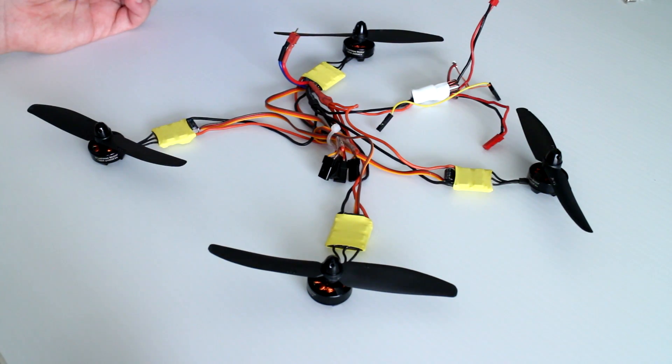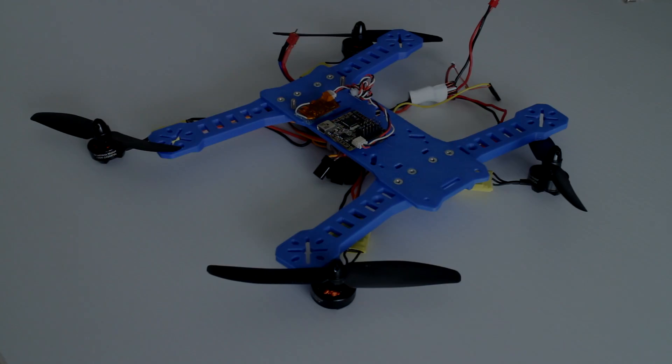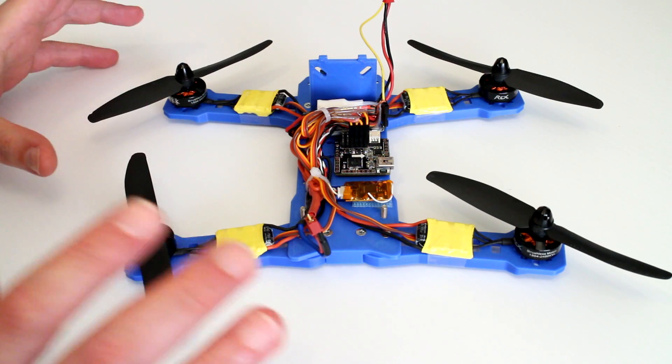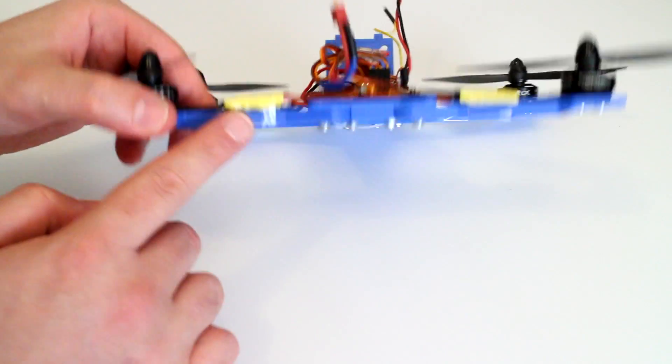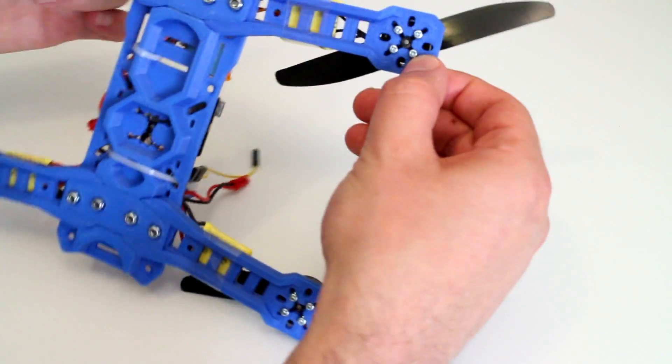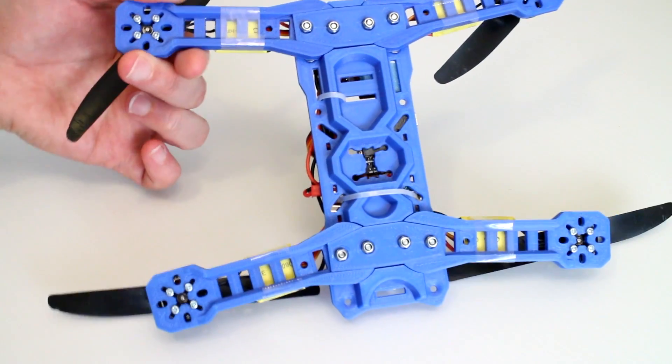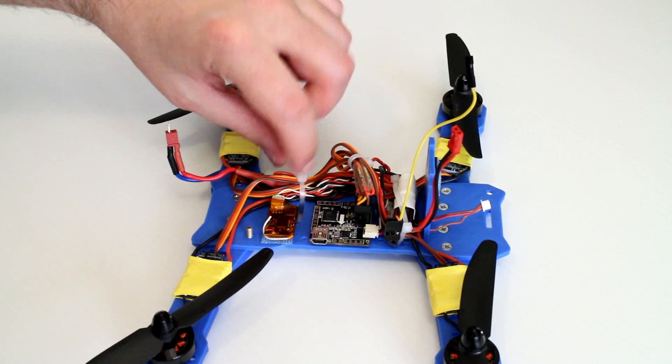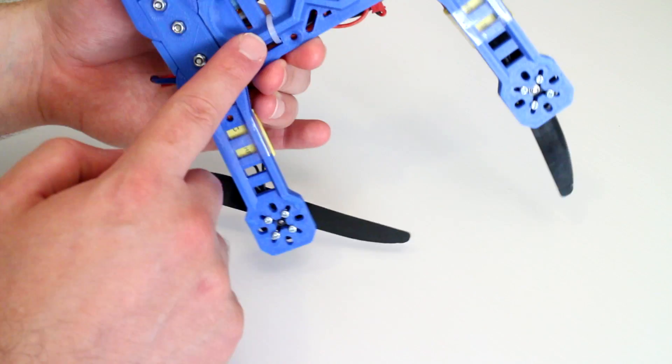Okay so the next thing to do is to mount this power system onto that. And here we are. Everything is now installed onto the bottom of the frame. The ESCs I have simply just taped to the arms. The actual motors I've used six millimeter by M2 screws so four on each motor.